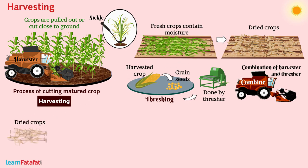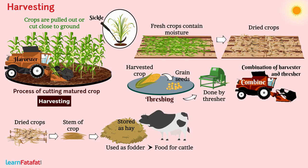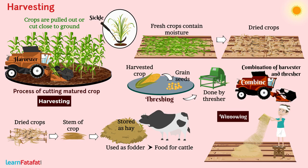After separation, the stem of the crop is cut into small pieces and stored as hay. It is used as fodder, i.e. food for cattle. Farmers with small holdings of land separate the grain and chaff by winnowing. The chaff, being lighter, flows away with the wind and falls away from the grains. Thus, grains are separated.